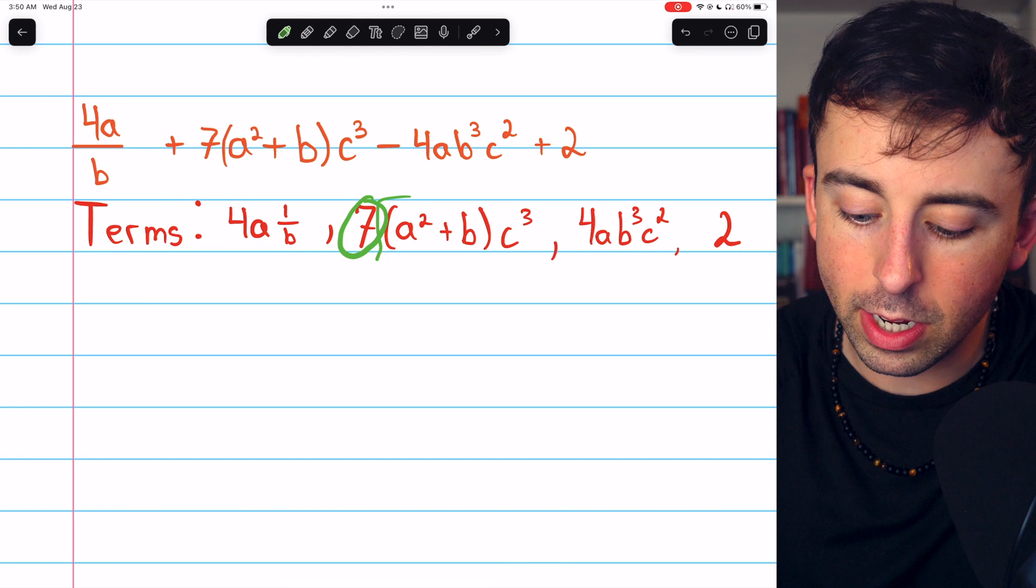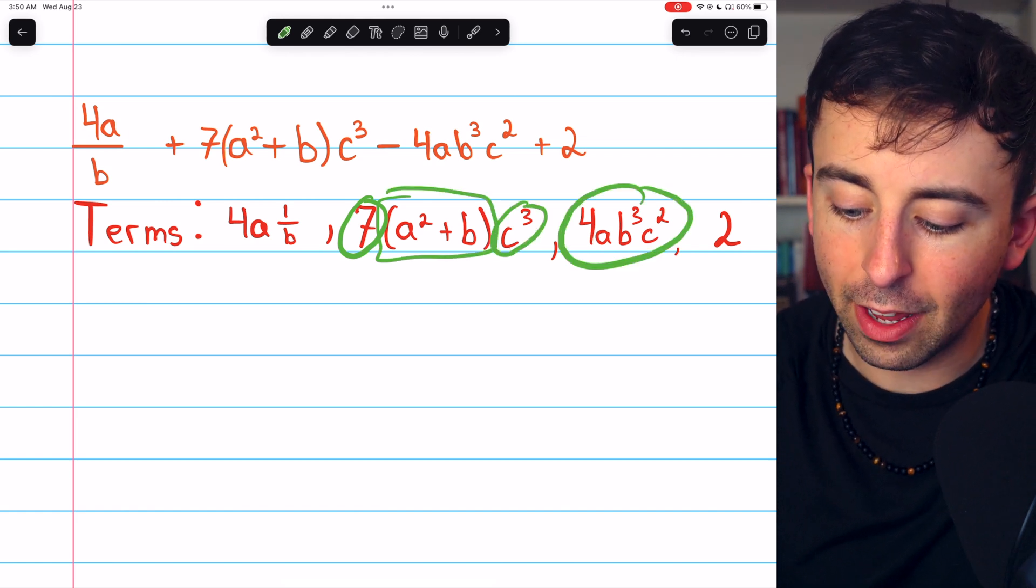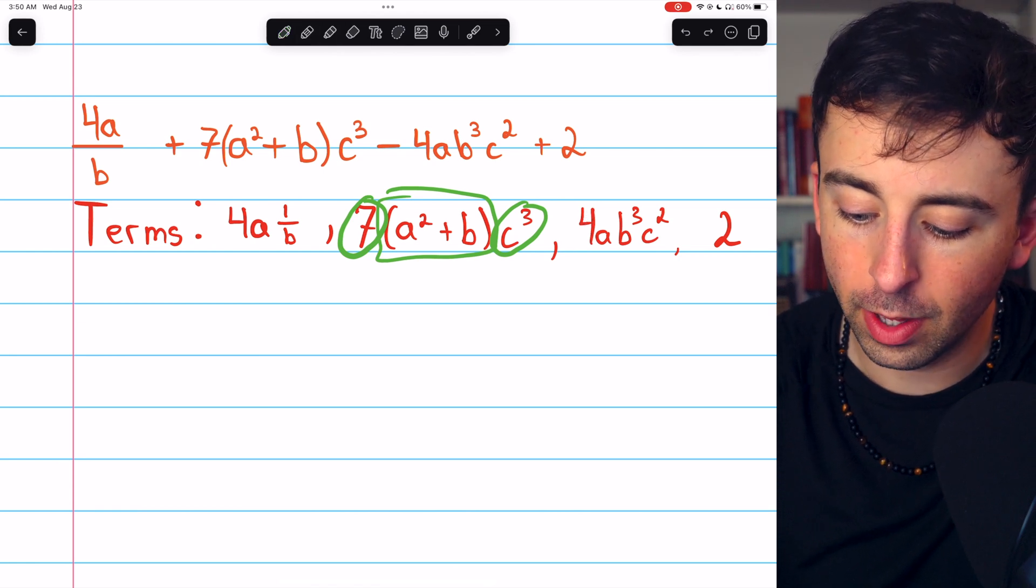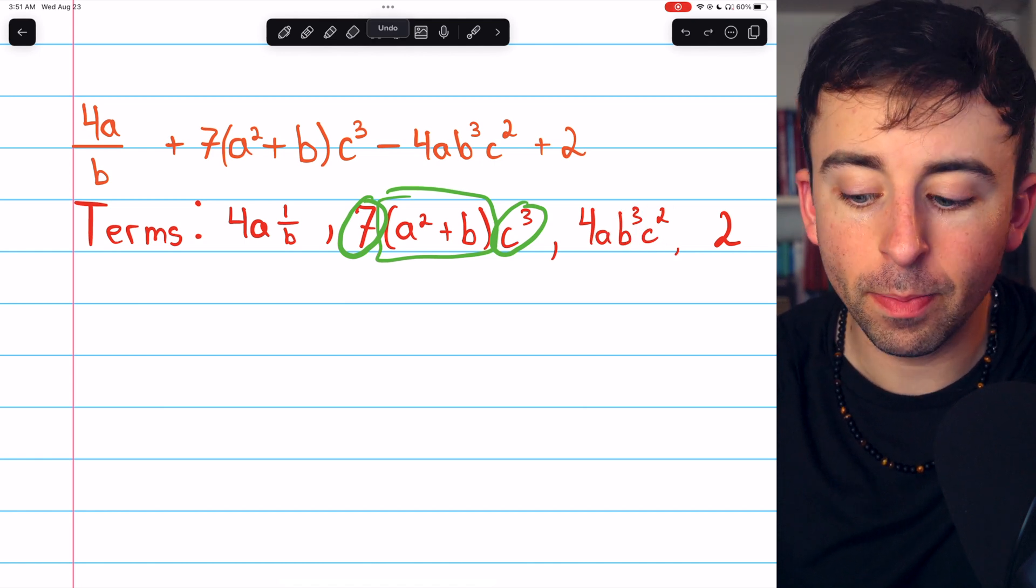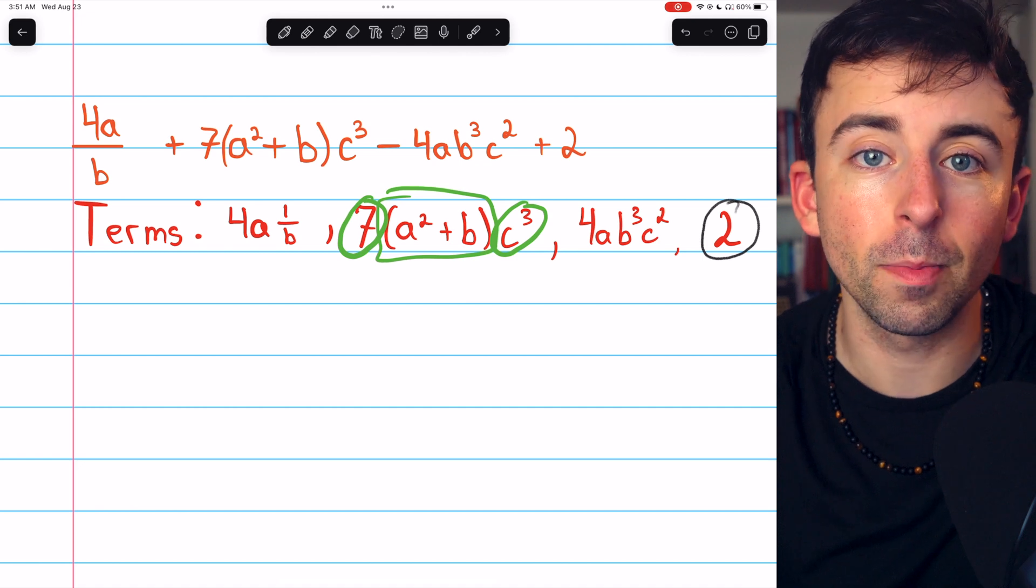So those are the three factors of this term. And then this third term has one, two, three, four factors. The factors are 4, a, b cubed, and c squared. And then the final term is just a constant. It is just one factor all by itself.